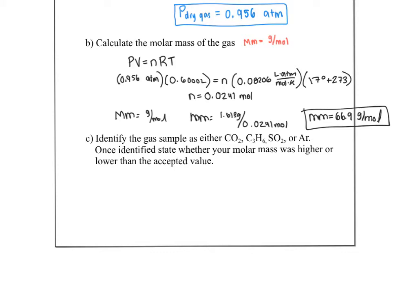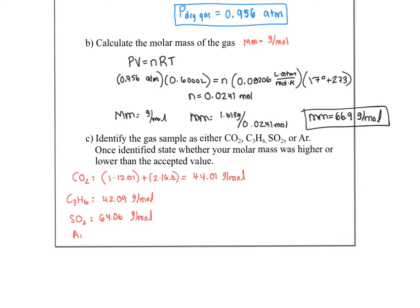The next pre-lab question asks us to identify the gas by comparing molar masses. CO₂ is 44.01 g/mol; C₃H₆ is 42.09 g/mol; SO₂ is 64.06 g/mol; and Argon is 39.95 g/mol. Please show your work calculating these molar masses on your lab for practice. Out of these options, SO₂ has the closest molar mass to 66.9, so the unknown gas is SO₂.